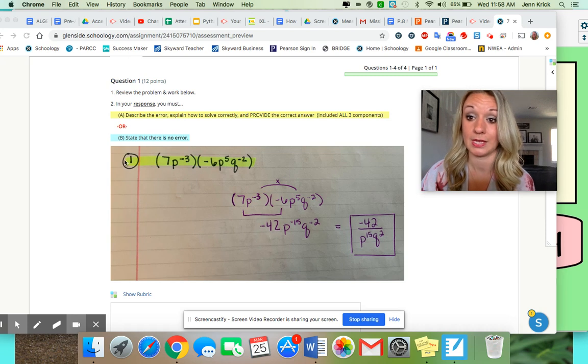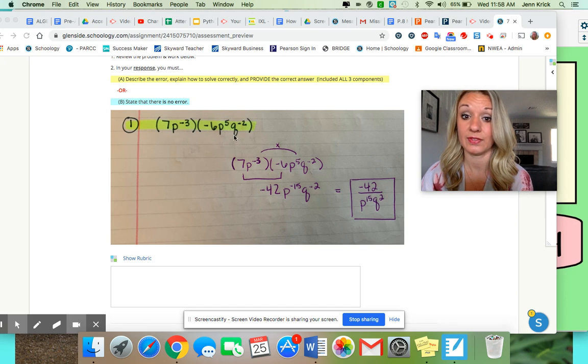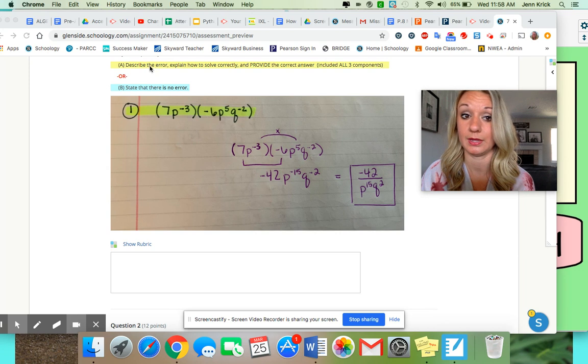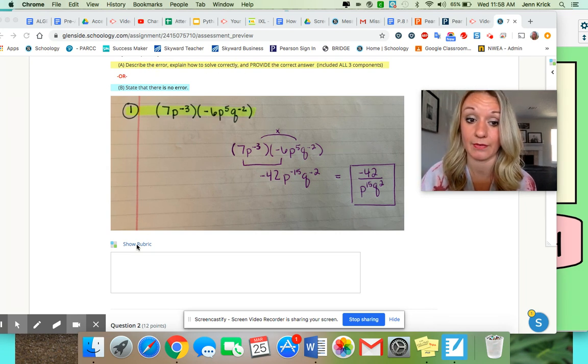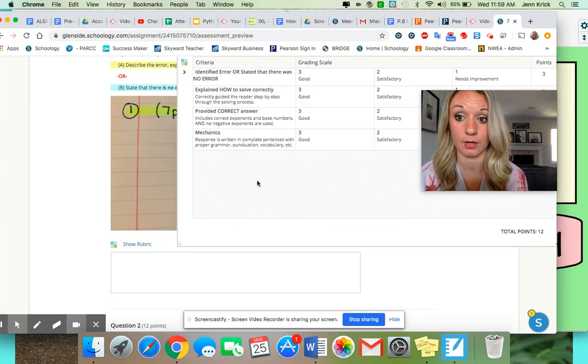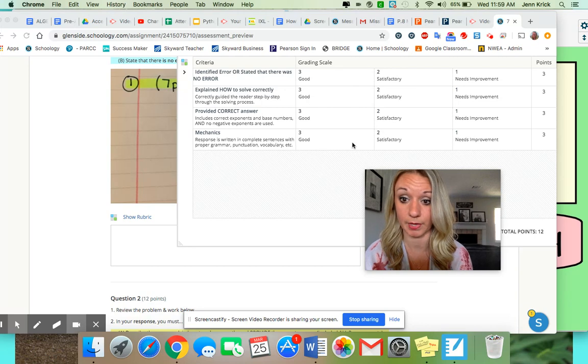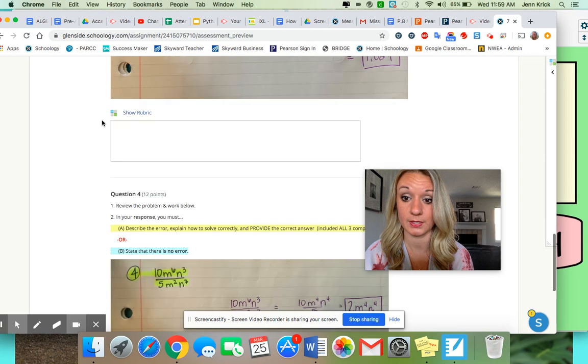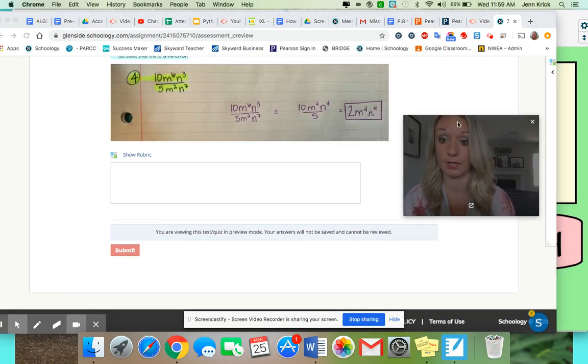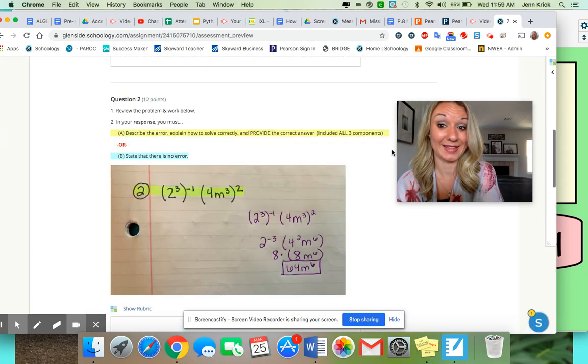So here's the problem. Here's my work. And then here's my answer. So if there is an error, which you can find out if you solve it yourself, you need to go through highlighted portions here and make sure you hit all the components. I even have a rubric in here. Let me show you really quick. I have a rubric to make sure that you hit every single component. You will do that for all four questions. And I will tell you there's only one that does not have an error. So three out of the four have errors. One does not. And I think that that's it.